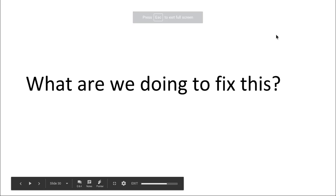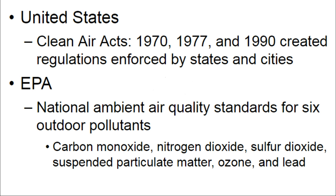What are we going to do to fix the existing air pollution that we have out there? The first thing that anybody ever does is pass laws. The major law here is the Clean Air Act of 1970, which was amended in 1977 and in 1990. It allowed the EPA to place restrictions on six outdoor air pollutants: carbon monoxide, nitrogen oxide, sulfur dioxide, particulate matter, ozone, and lead. The EPA regulates these under the Clean Air Act.